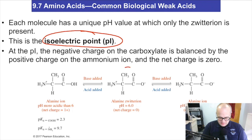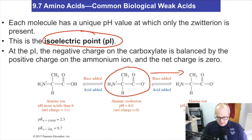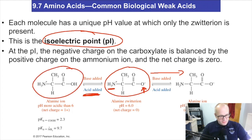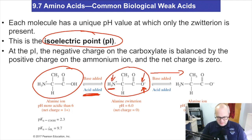Here we have a zwitterion of the amino acid alanine. If you add base, the conjugate acid will react. If you add acid, the conjugate base will react, and you'll get back what we discussed on the previous slide. That's really all you have to know: when you have a zwitterion, you have an acid and a base. Add acid — the base reacts. Add base — the acid reacts. That's it.